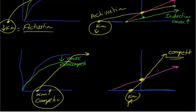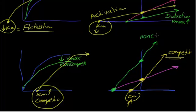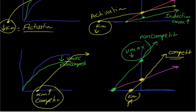How about the non-competitive inhibitor? The Km stays at the same point, but Vmax decreases — so the curve shifts downward. This is the non-competitive inhibitor curve. Non-competitive inhibitors affect Vmax; Vmax decreases. To repeat: Km increase = competitive; Vmax decrease = non-competitive; Vmax increase = induction; Km decrease = activation.